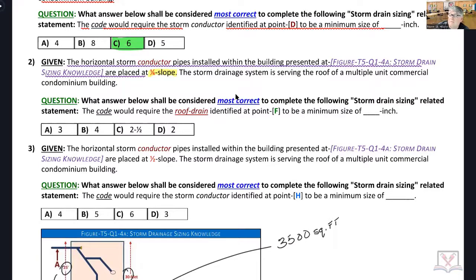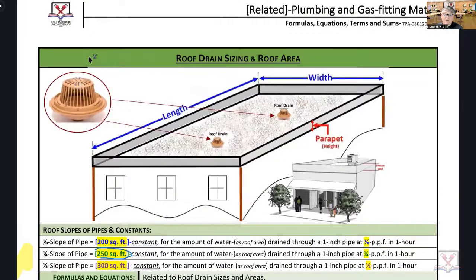Storm drainage system serving the same building. Code would require the roof drain at point F. We're not talking conductor pipes, we're talking the roof drain itself. That thing right there.